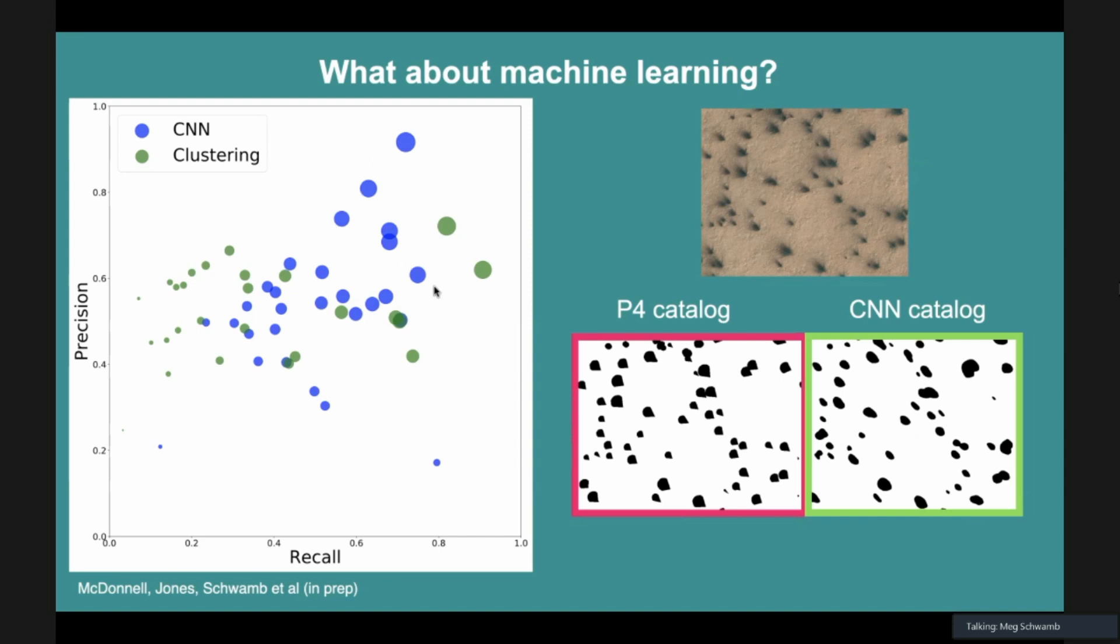All I want to show here is that we want to be up in this corner. Precision is telling you out of the stuff that you found that you predict to be real or fans, how many of them are actually real fans. Recall is telling you about the opposite side, about your actual positive data, how many times you got that right. You want to be in the top corner here. These are each different locations on Mars that we had HiRISE imaging in.